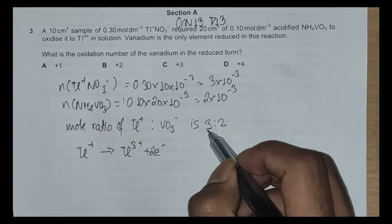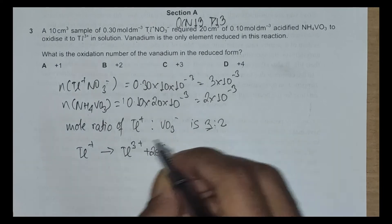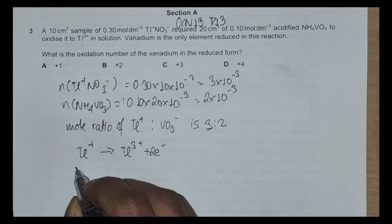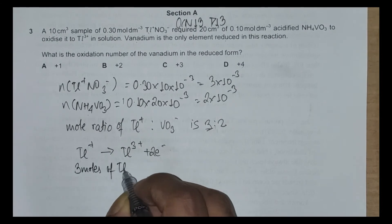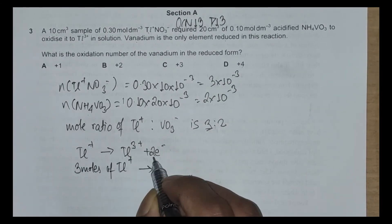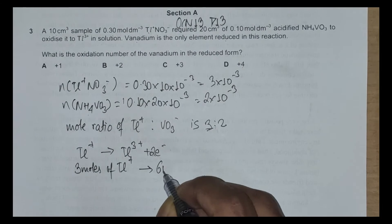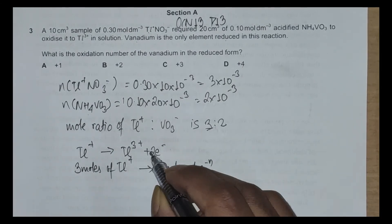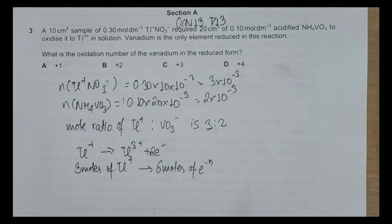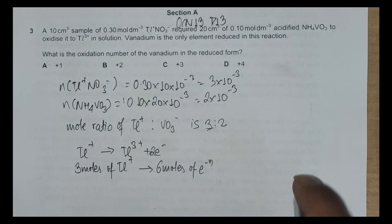Now next thing is using these ratios, we have moles of TL⁺ is 3. So 3 moles of TL⁺ loses or gives 6 moles of electrons.